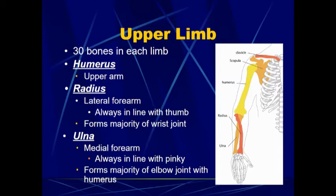The radius and the ulna are one of the main reasons we have the anatomical position. Because if the arm is just hanging down at the side like we normally would have our arm, the radius and the ulna are going to overlap, making it difficult to see the individual bones as well as other structures like muscles and blood vessels.